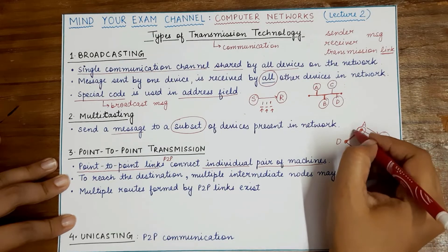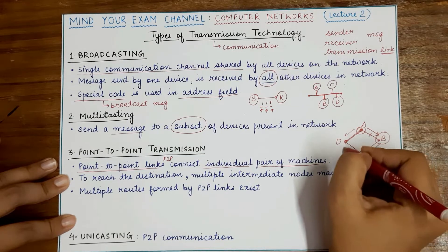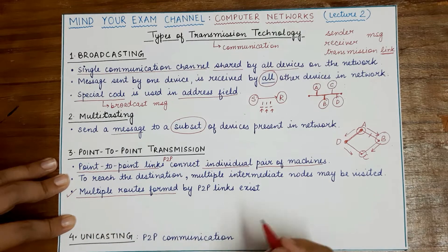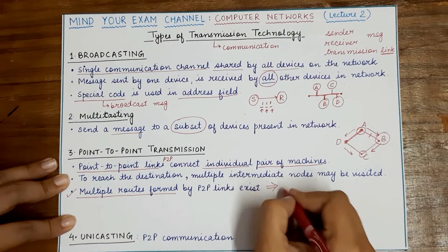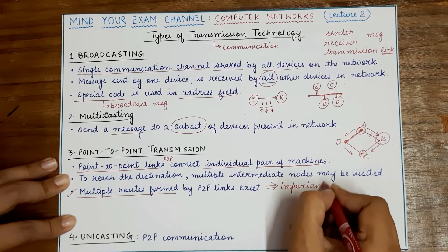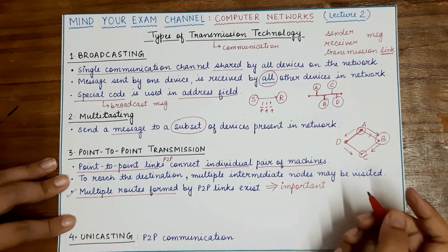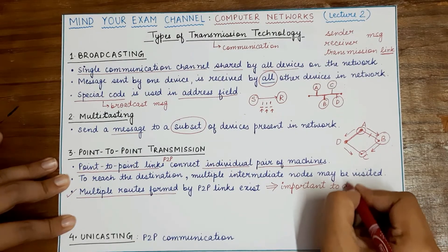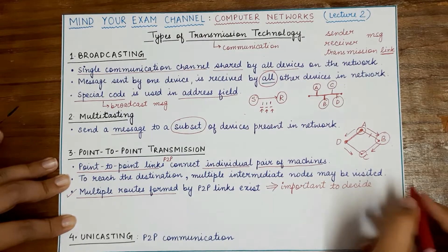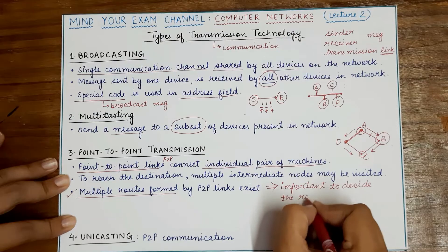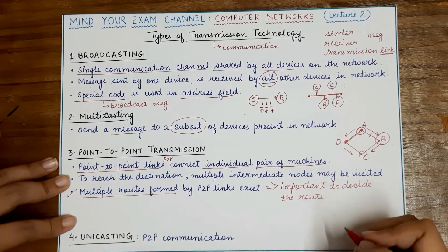The same message could have gone through D also. It is important to know that when point-to-point links exist, multiple routes are possible for sending a message. Therefore, it is important to determine which is the best route. This is known as routing, which we'll study in detail in upcoming lectures — deciding the shortest or fastest route to be taken by the message.